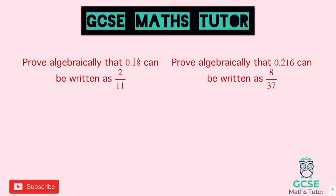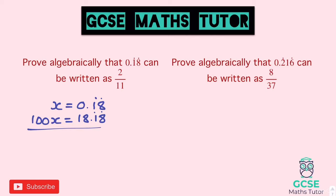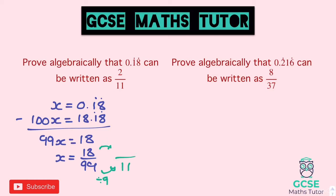For the first question, we've got 0.18 with two recurring decimals, so we times by 100. x equals 0.18, and times by 100 gives 18.18. They nicely align, so taking x's away gives 99x equals 18. Turning that straight into a fraction: 18 over 99. That simplifies by dividing by 9: 18 divided by 9 is 2, and 99 divided by 9 is 11. Final answer: 2 over 11.